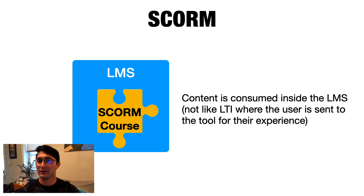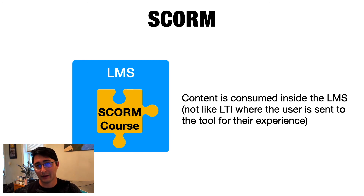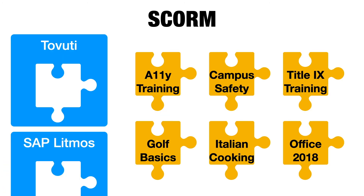The difference between LTI and SCORM is that in LTI, you're attaching two separate technologies together. In SCORM, you're completely absorbing content into the other tool. For the user, what that means is that with SCORM, content is consumed inside of the LMS — your entire experience happens inside of the LMS. That's unlike LTI, where you're directed to the tool through that connection for their experience. So in SCORM it all happens in the LMS; in LTI, we send them to the tool for their experience. Just like how LTI helps us connect lots of different apps with our LMS, SCORM helps us connect content and courses with our LMS. So whatever LMS you have, you can use that accessibility training, campus safety training, or Title IX training and just bring that content into your LMS.